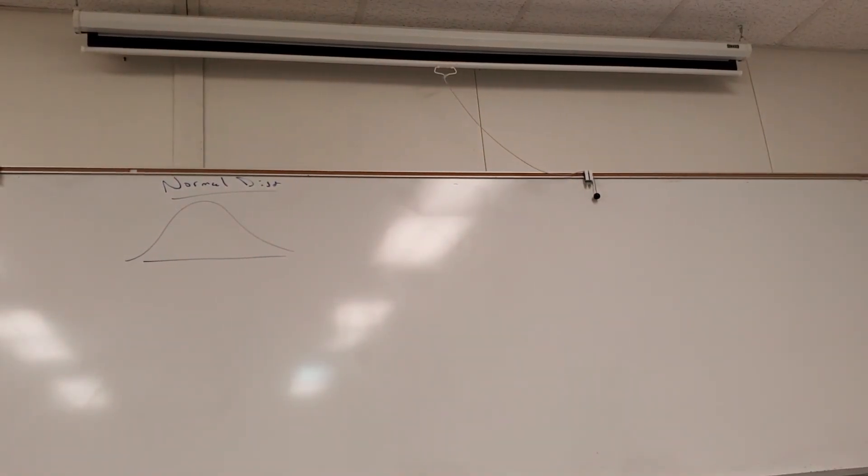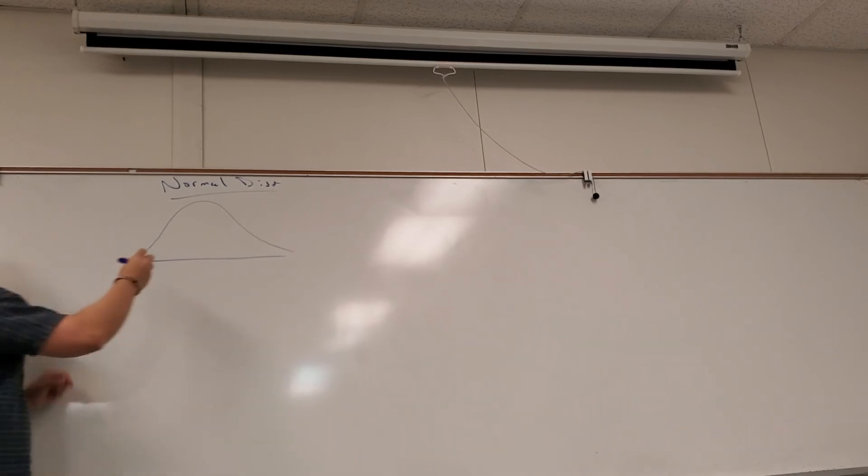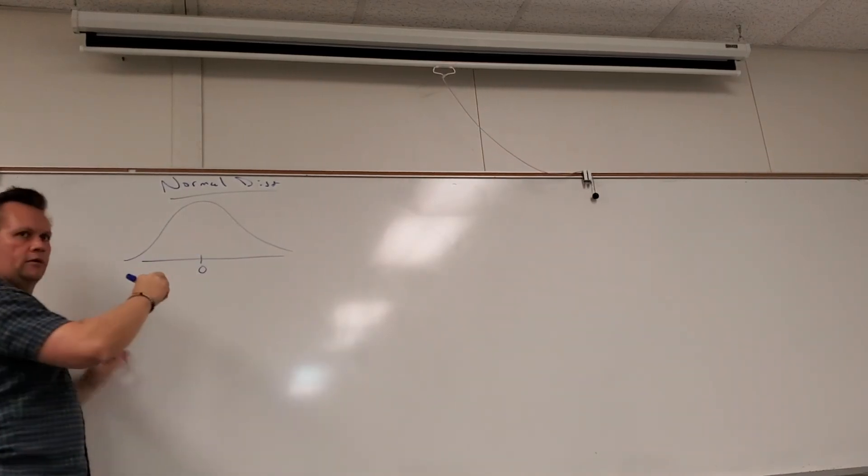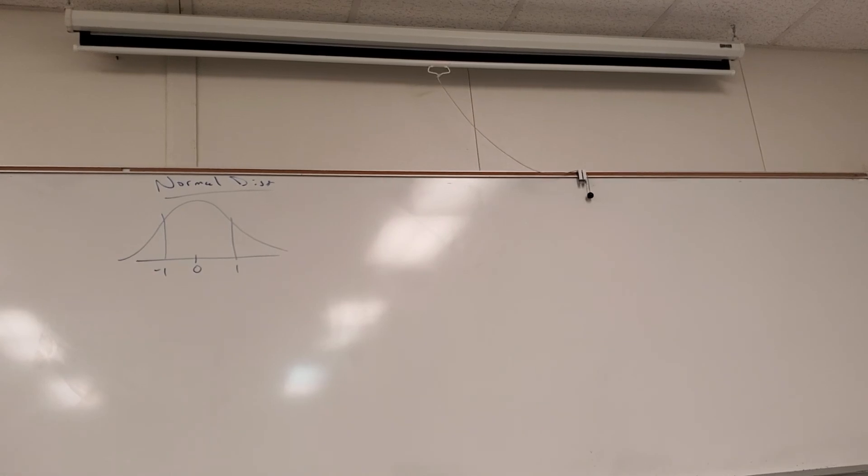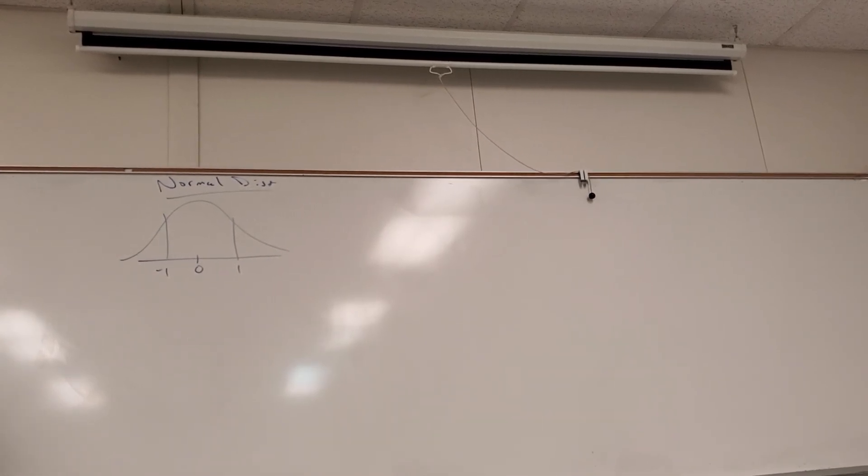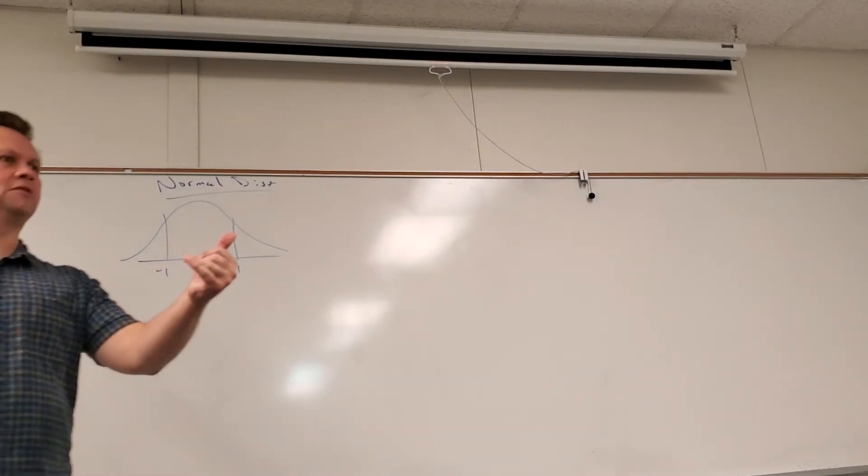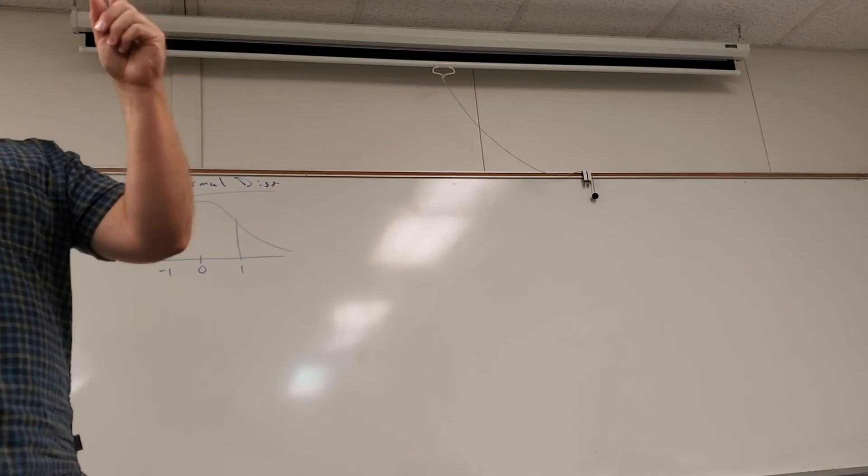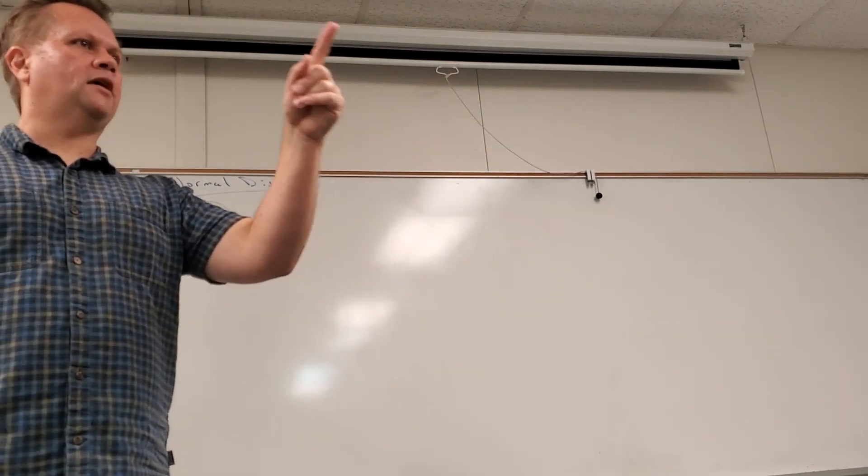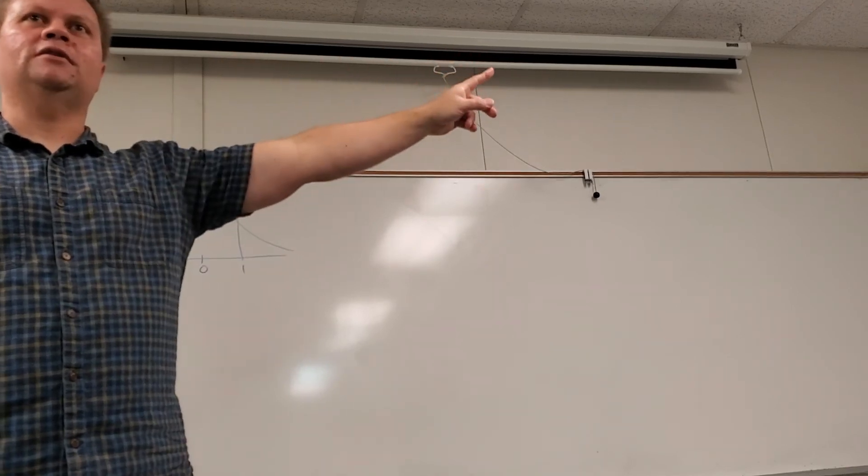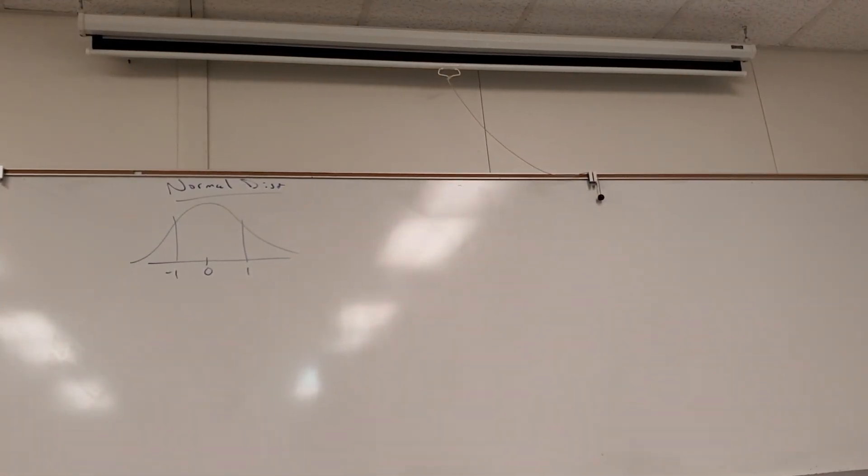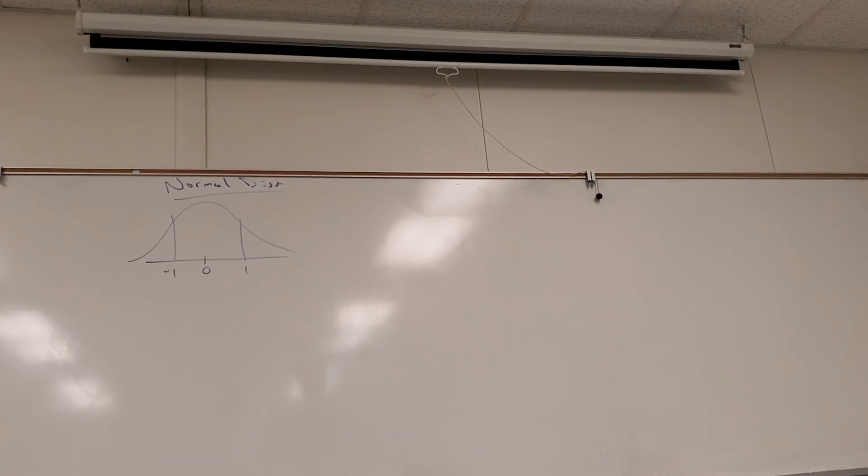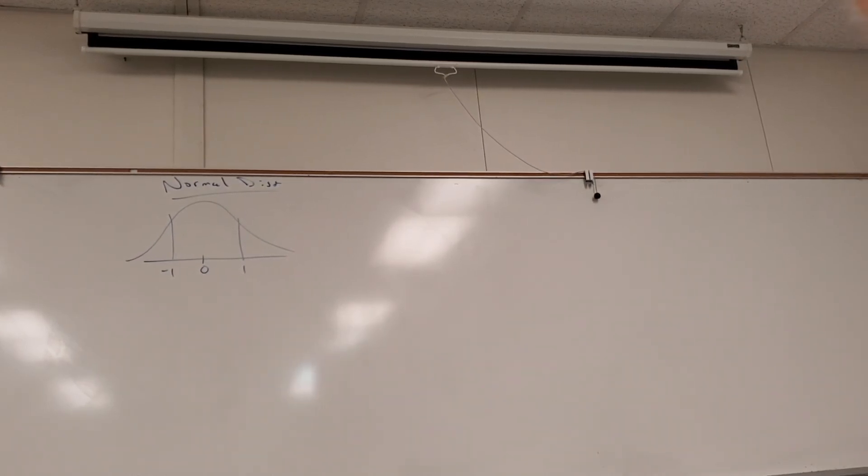So whatever the mean is, I'm going to put a zero there. And then a one here and a negative one there. So what do those numbers represent? Steps. Formalize that a little bit - standard deviations, right? Here we go. I'm about to tell you something that will be on the next test. This actually will be on every test from now on. What I'm about to tell you - it's going to be a question on every test from now on.